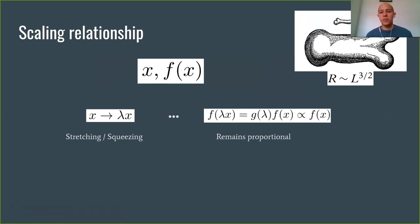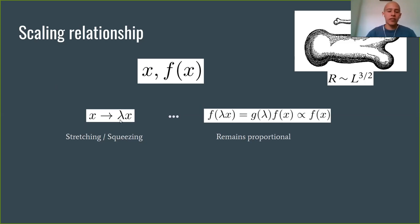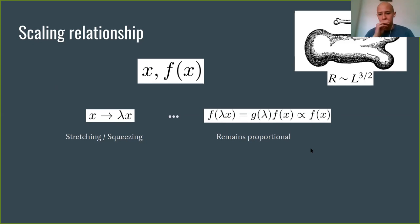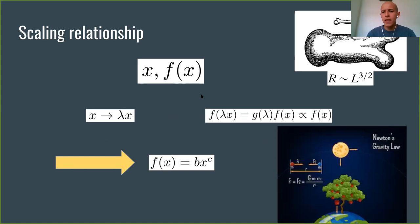Scaling relationships exist in many different fields. What is a scaling relationship? Basically, x and f(x) are in a scaling relationship if when you stretch or squeeze x by lambda, then f(lambda·x) is also stretched or squeezed accordingly as a function of lambda, and this scaled version of the function is proportional to the original f(x). The general way to describe this relationship is by power laws — basically just taking x and putting it to the power of c.